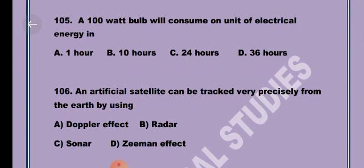Question 6. An artificial satellite can be tracked very precisely from the earth by using Option A, Doppler Effect.